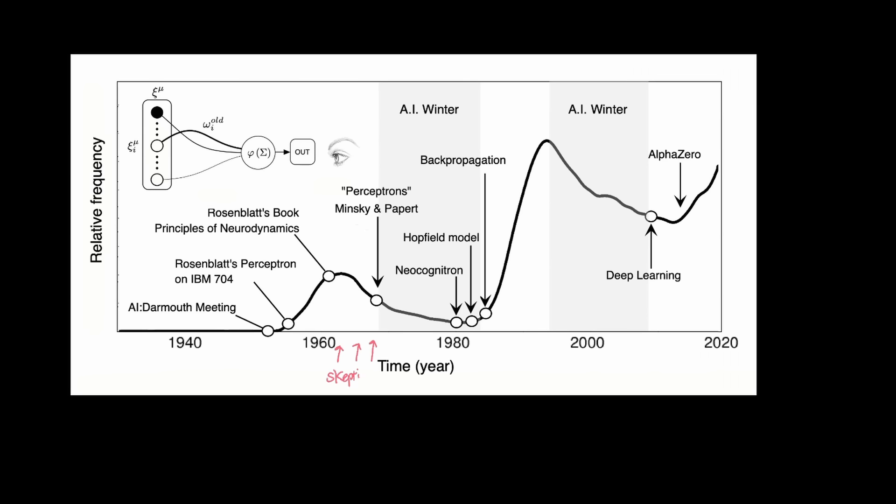And other skepticisms along the way have led the AI industry into what's called AI winters twice in the past. And even after surviving two AI winters, it still faces skepticism on varying levels.